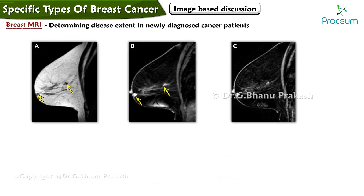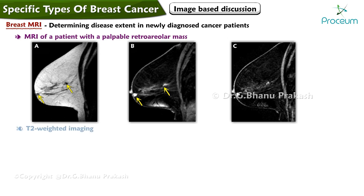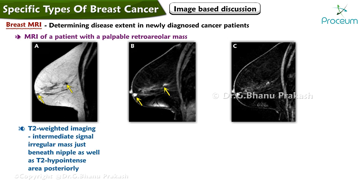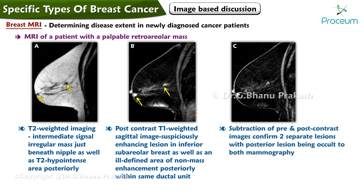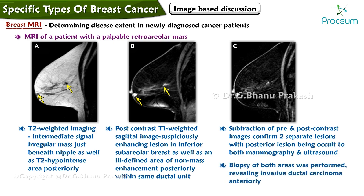Breast MRI can be useful for determining disease extent in newly diagnosed cancer patients. In a patient with a palpable retroareolar mass, T2-weighted imaging demonstrates an intermediate signal irregular mass just beneath the nipple as well as a T2 hypointense area posteriorly. Post-contrast T1-weighted sagittal imaging demonstrates a suspiciously enhancing lesion in the inferior subareolar breast and an ill-defined area of non-mass enhancement posteriorly within the same ductal unit. Subtraction of pre- and post-contrast images confirms two separate lesions, with the posterior lesion occult to both mammography and ultrasound. Biopsy revealed invasive ductal carcinoma anteriorly and ductal carcinoma in situ posteriorly.